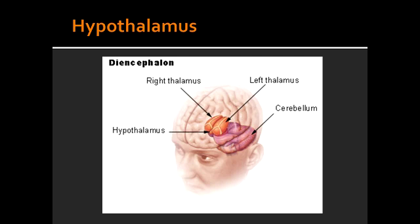What are the two inputs received by the hypothalamus? The hypothalamus receives input from the OVLT — which stands for organum vasculosum of the lamina terminalis — as well as input from the area postrema. The OVLT is responsible for sensing changes in osmolarity, while the area postrema responds to emetics. Notably, neither the OVLT nor the area postrema is protected by the blood-brain barrier.